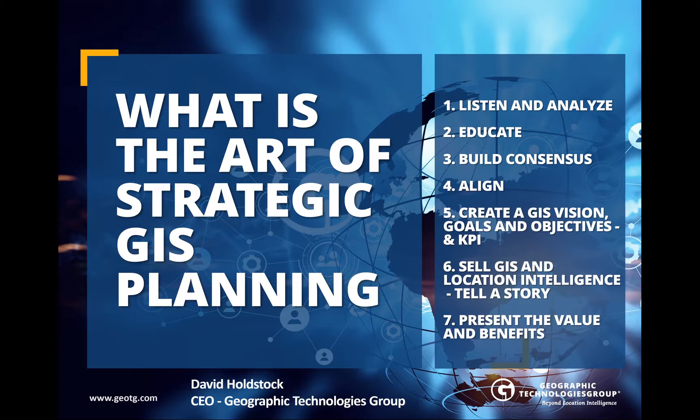Don't ignore these things. You can put plans together, but don't ignore them. You must align your vision for GIS with the vision, goals, and objectives of your organisation. I've looked at GIS strategic plans and solutions for software that just don't align with the vision of the organisation, and the vision of the organisation is the utmost. Number five, you've got to create your own GIS vision, goals, and objectives — but not just that, you've got to create key performance indicators. Then number six, you've got to sell GIS and location intelligence. You've got to be able to tell the story.